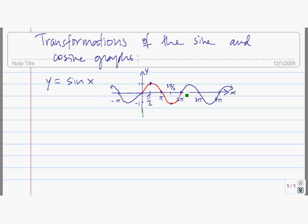This length right here is called the period. The period of y equals sine of x is 2 pi. Another way to think of the period is it's the length of one full cycle — how far along the x-axis we have to go to complete one full cycle.